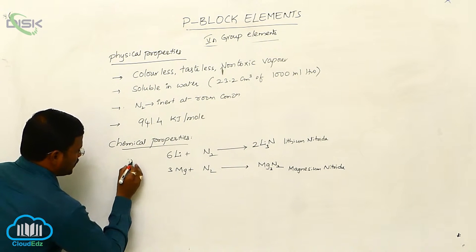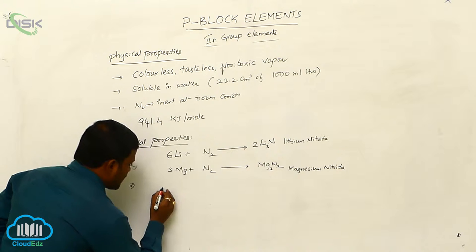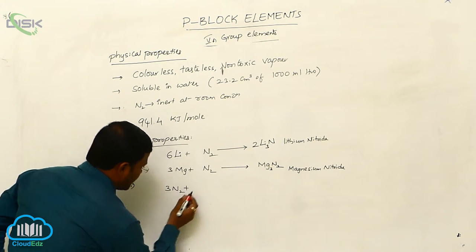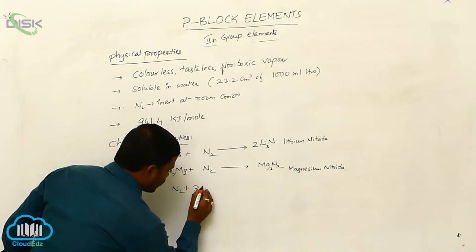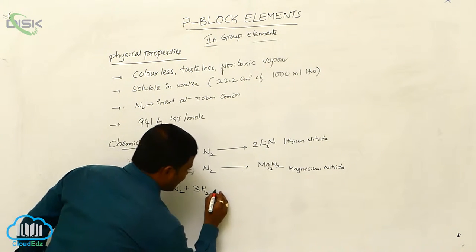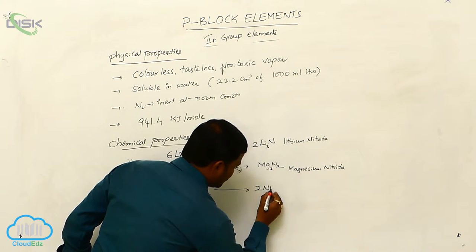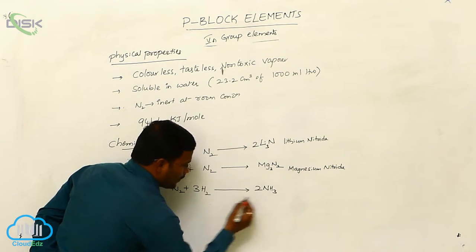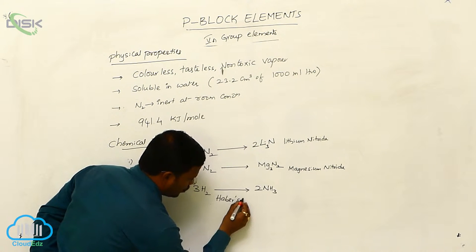In another chemical property, at high temperatures dinitrogen reacts with hydrogen gas and produces ammonia. This method of preparation of ammonia is called Haber's process.